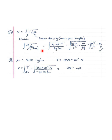Instead of dividing by kilograms per meter, we multiply by meters per kilogram — the kilograms cancel. We're left with meters squared per second squared under the square root, and that becomes meters per second.